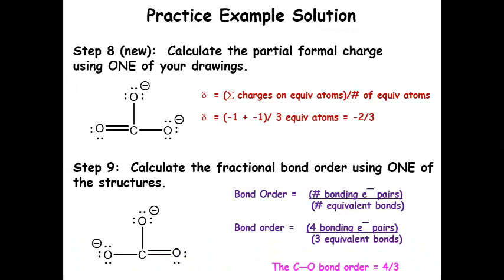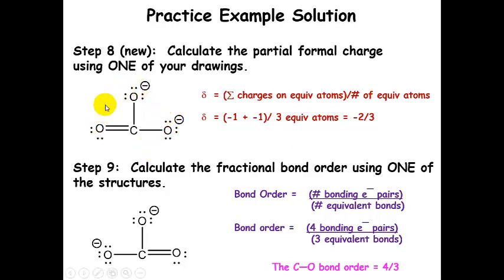Let's calculate the partial formal charge using one drawing — it doesn't matter which one. We add up the charges on equivalent atoms. Which are the equivalent atoms? All the oxygens involved in resonance in these equivalent resonance forms. There are two negative-one charges, so that's negative two total on equivalent atoms, divided by three equivalent atoms. We get a negative two-thirds charge on each oxygen — the negative two is smeared out between all three oxygens. So the partial formal charge is negative two-thirds.